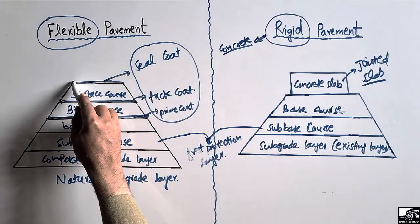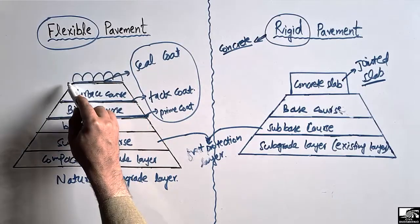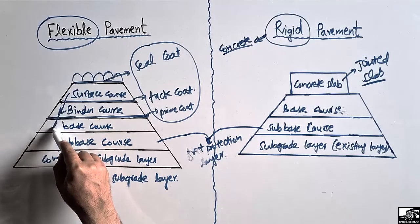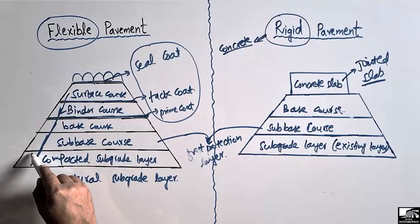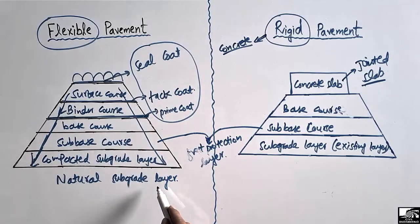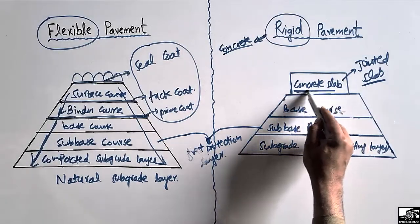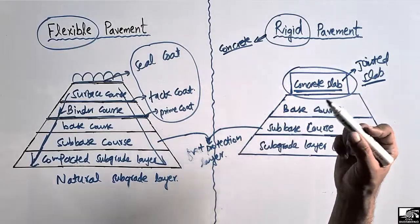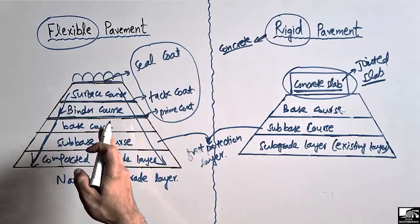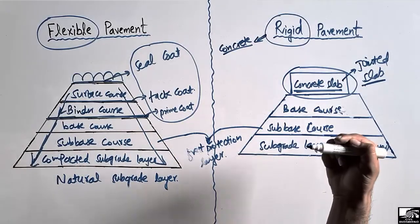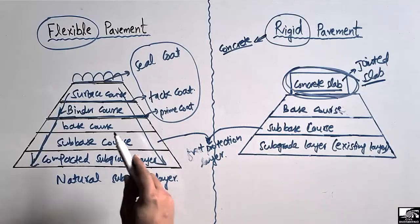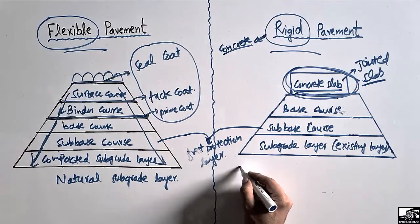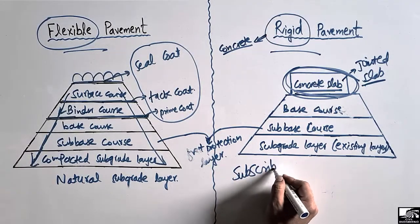When the load acts on the surface course, the load is transferred from the surface course, then to the binder course, then to the base course, then to the subbase, and finally to the compacted subgrade layer. In the case of the concrete slab, most of the load is taken by the concrete slab itself and it does not show the same transfer mechanism as flexible pavement — instead it shows a flexion mechanism. These were the different layers in flexible and rigid pavement construction. Thank you for watching.